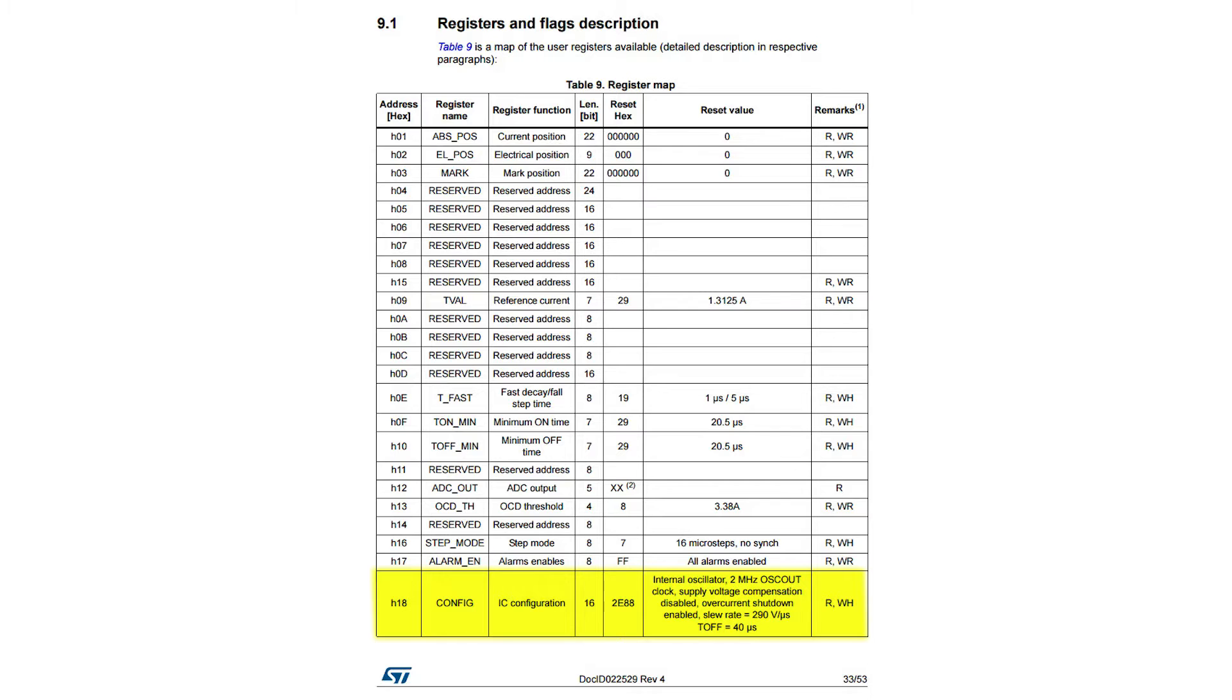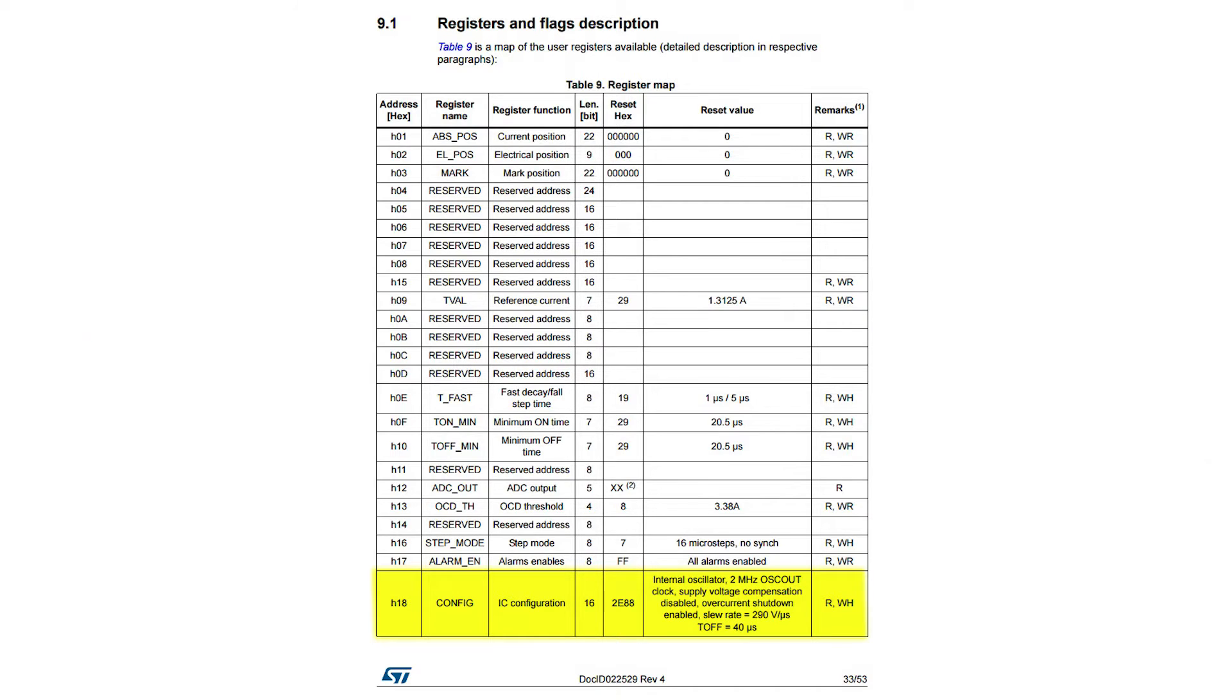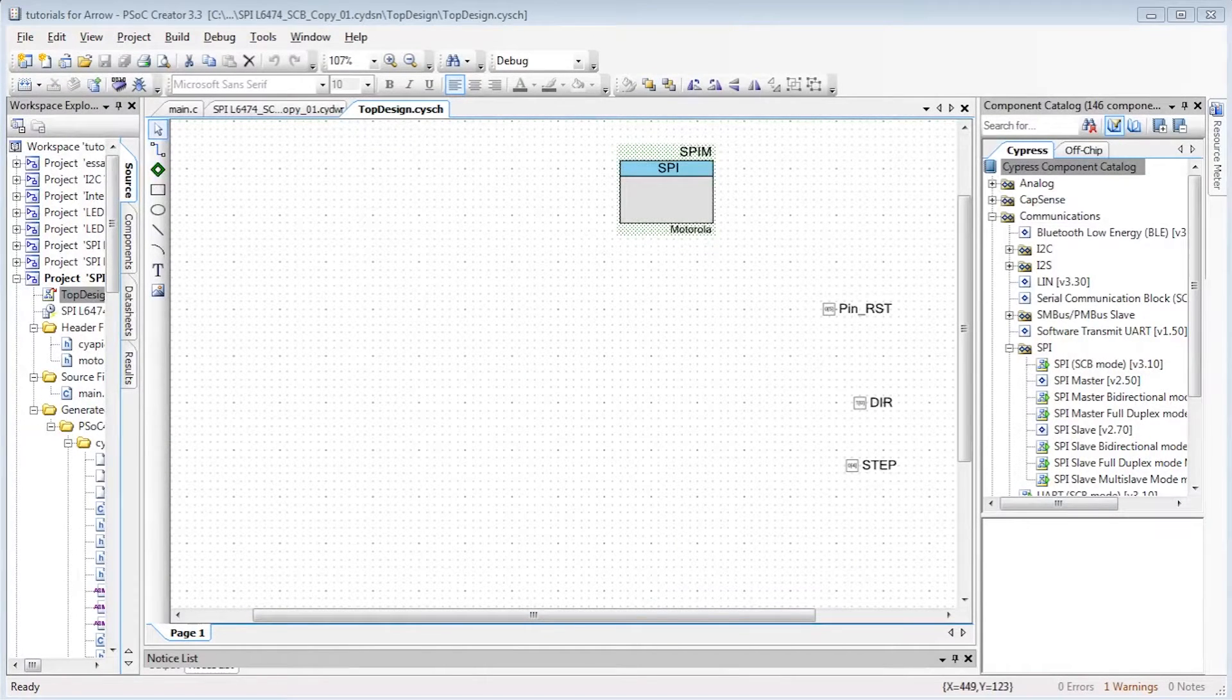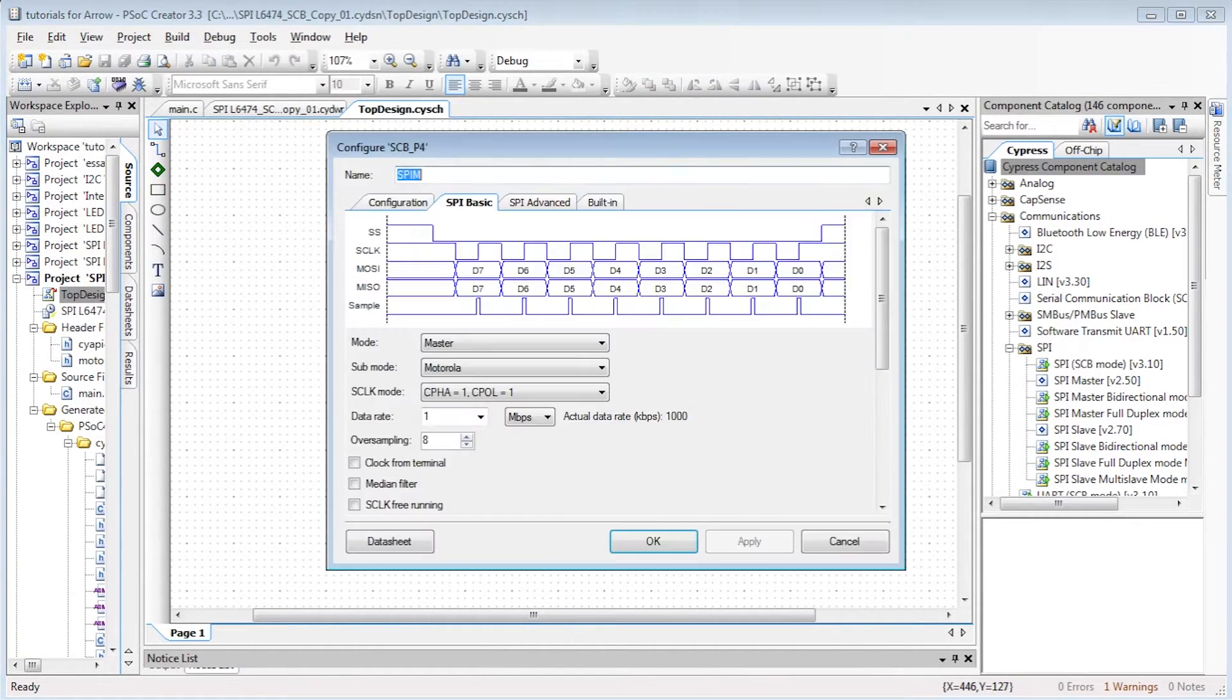In a similar way, let's program an SPI bus. To demonstrate, we use the stepper motor driver L6474 from ST. We want to read the configuration on address 18, that is 2E88. The communication is done thanks to an SPI bus.